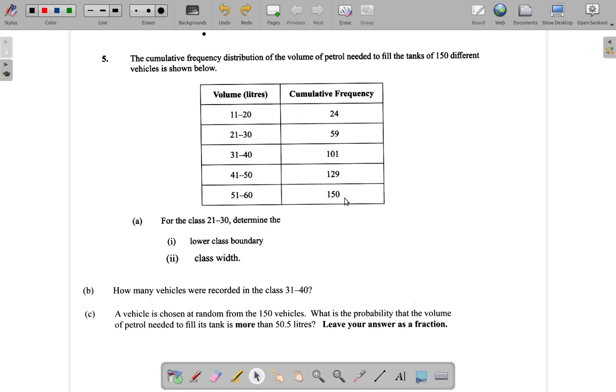Part A1 says for the class 21 to 30, determine the lower class boundary. Now remember, the lower class boundary is the largest value you would have collected before you round it up to 21. 21 is a lower limit here, but the boundary can be smaller. What's the largest value that you would round up to 21? Or the smallest? What's the smallest value you would round up to 21?